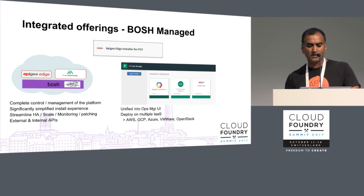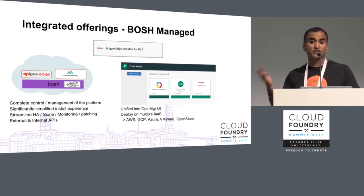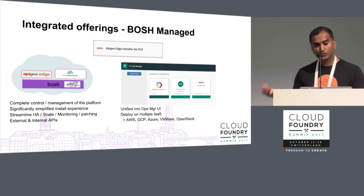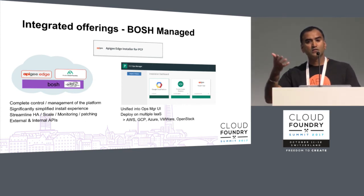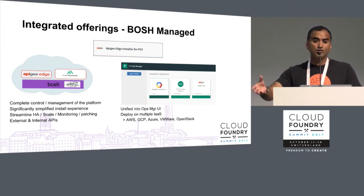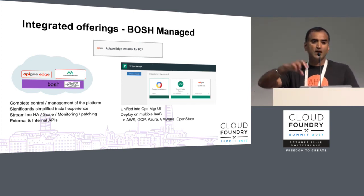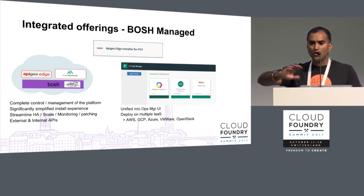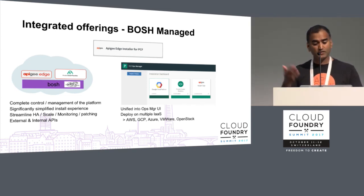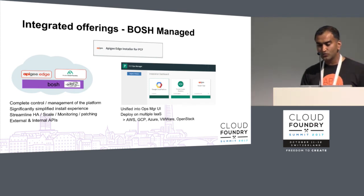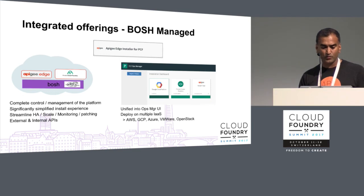The second offering is the Apigee Edge installer for Pivotal Cloud Foundry. You can leverage this to install Apigee Edge right next to your Pivotal Cloud Foundry foundation. In the same way that Bosh manages Pivotal Cloud Foundry, you can use Bosh to manage Apigee Edge — getting all the benefits of management, maintenance, and self-healing. This is a pattern used by many of our on-premises customers and continues to get more and more traction.